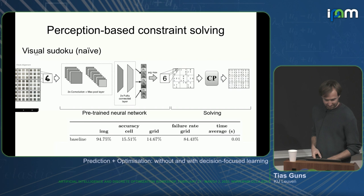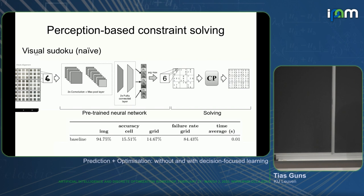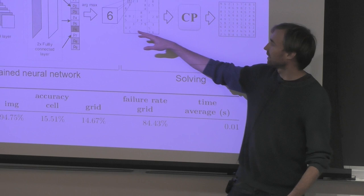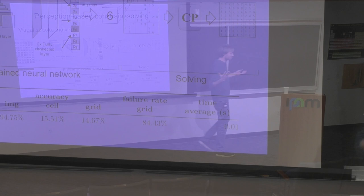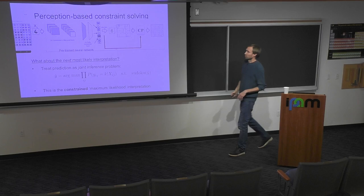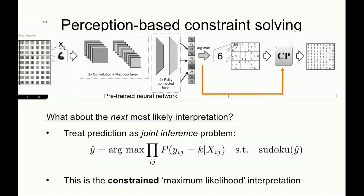So that's the problem setup. What's happening is that we take the argmax for each of the cells independently, and then the solver finds out that this interpretation is not something that can be completed into a Sudoku. But what about the next most likely interpretation? We don't need to take the argmax for each cell, and we can reformulate this as a joint inference problem.